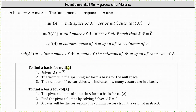For review, to find a basis for the null space of A, we solve matrix A times vector x equals a zero vector. The vectors in the spanning set form a basis for the null space, and the number of free variables indicates how many vectors are in a basis. To find a basis for the column space of A, the pivot columns of matrix A form a basis for the column space. We find the pivot columns by solving matrix A times vector x equals a zero vector, and the basis will be the corresponding column vectors from the original matrix A.